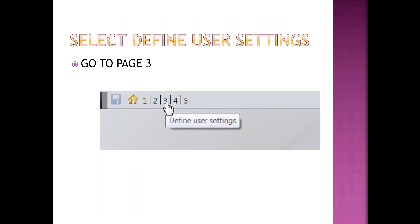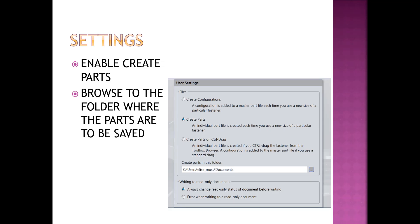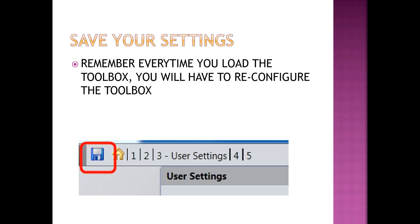It's best to configure your toolbox so that you're creating part files that are saved with your assembly. To configure your toolbox, right-click in the toolbox panel and select Configure. Go to page 3 of the user settings, enable where it says 'Create Parts,' then browse to the folder where you want your files to be saved — that should be your work folder — and then save your settings. If you're using a lab computer, you need to reconfigure the toolbox every time to make sure it's saving to the correct location.